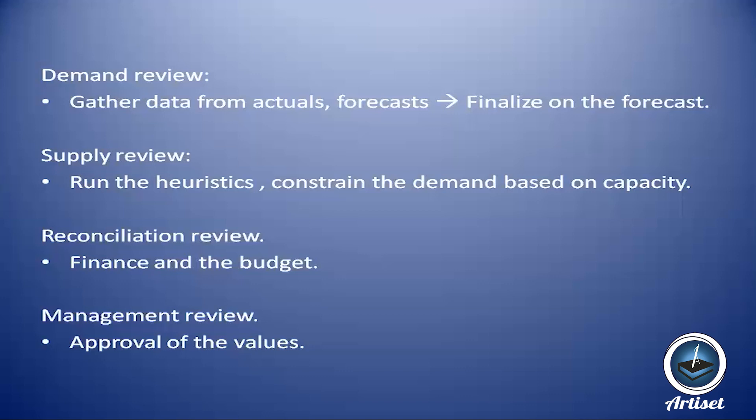Then comes the reconciliation review: the finance team decides whether the company can allocate budget for this manufacturing cycle, and whether new products can be funded. Finally, there is the management review, where leadership decides whether the agreed demand values should go to production or be stopped, evaluating long-term strategic goals, checking if current process data matches those goals, and reviewing new product launches.